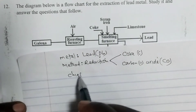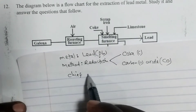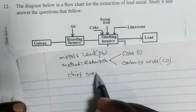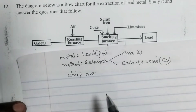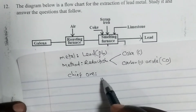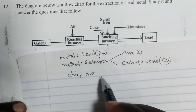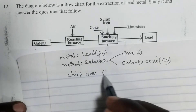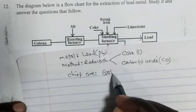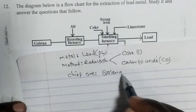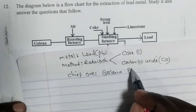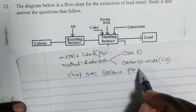Number 2, we look at the chief ore for the extraction of lead metal. The chief ore for the extraction of lead metal is Galena, whose formula is PbS.